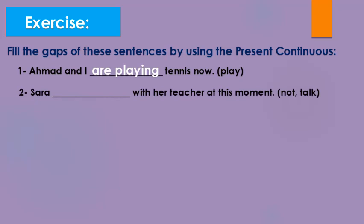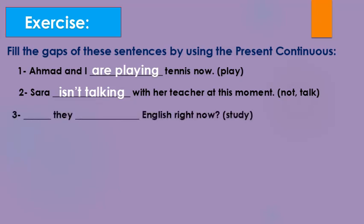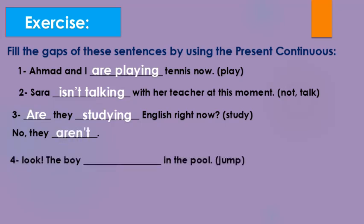Number two: Sarah __ not (talk) with her teacher at this moment. This is a negative form and 'Sarah' is singular, so: 'Sarah isn't talking.' Number three: a question — __ they (study) English right now? The keyword is 'right now', so: 'Are they studying English right now?' The answer: 'Yes, they are' or 'No, they aren't.'